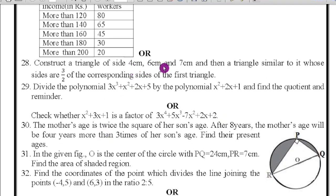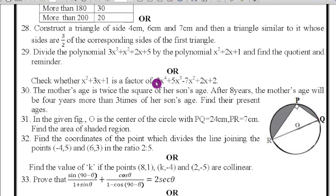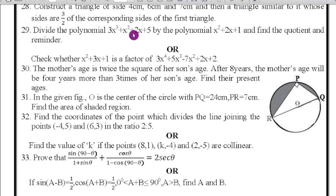Next question number 28: construct a triangle of side 4 cm, 6 cm, 7 cm, then triangle similar to it whose sides are 3/2 times corresponding to the sides of the first triangle. So construction you must do, 3 marks. Next question number 29: divide the polynomial 3x³ + x² + 2x + 5 by the polynomial x² + 2x + 5, then find the quotient and remainder. For that one more option is check whether x² + 3x + 1 is a factor of 3x⁴ + 5x³ - 7x² + 2x + 2. I will do the easy one, divide it, find quotient and R(x). Question number 30: the mother's age is twice the square of her son's age. After 8 years the mother's age will be 4 years more than 3 times her son's age. Find their present age.